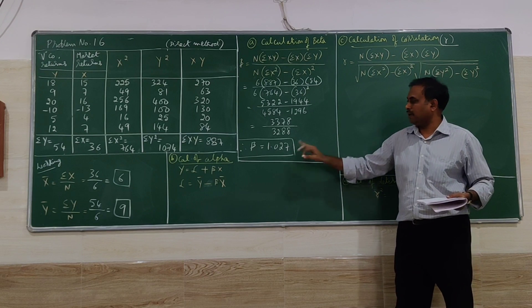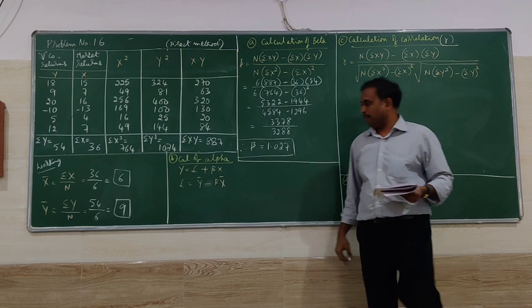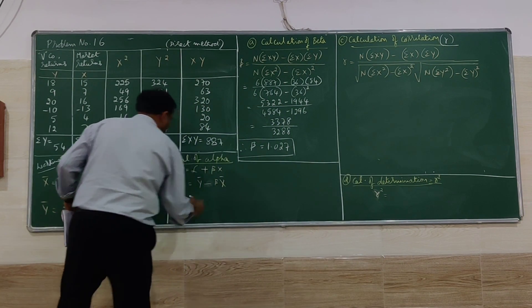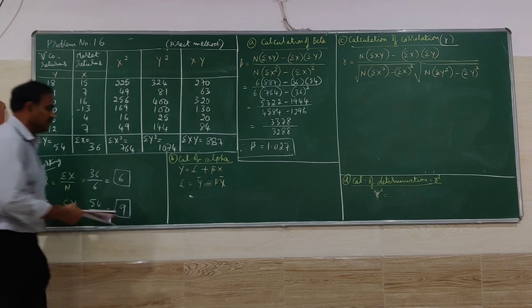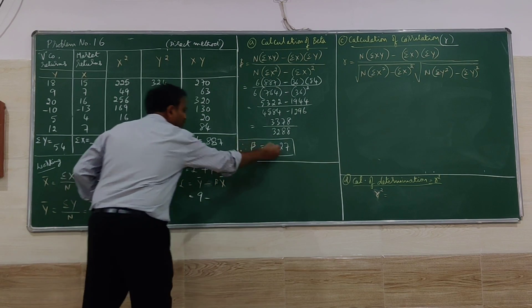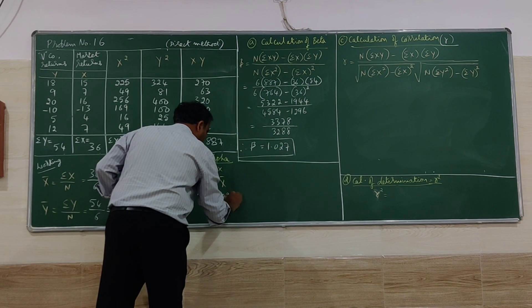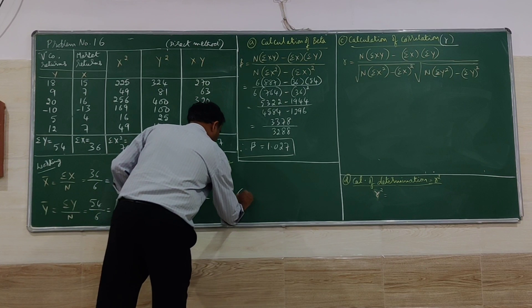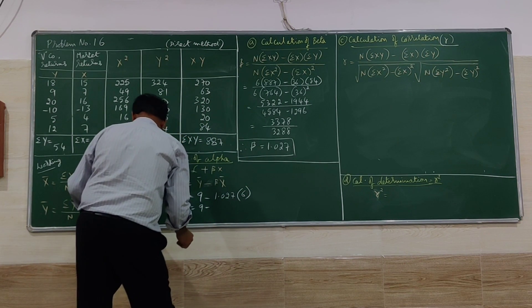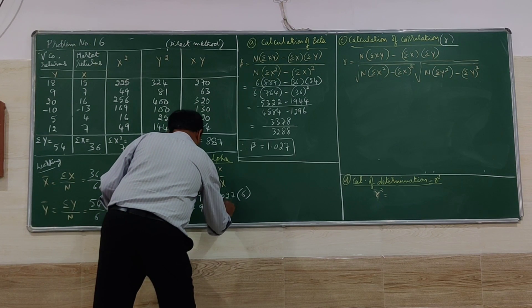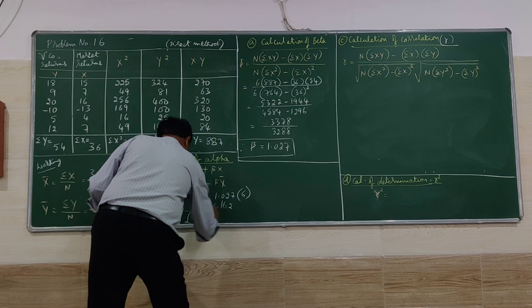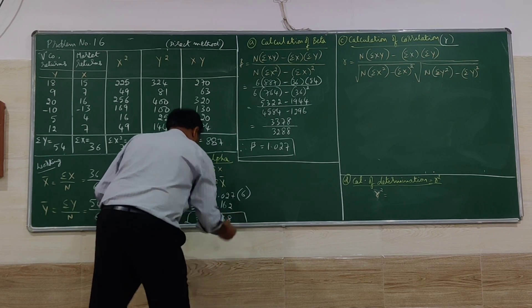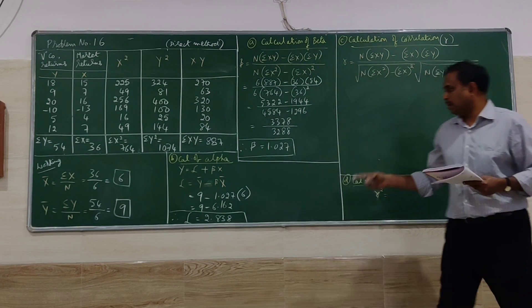With beta = 1.027, we move to the alpha formula: alpha = ȳ − beta × x̄ = 9 − 1.027 × 6 = 9 − 6.162 = 2.838. So alpha = 2.838.